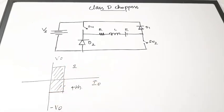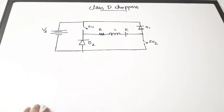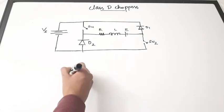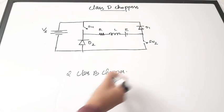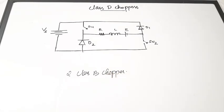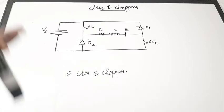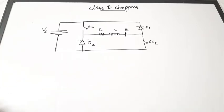Now let us see the operations of class D chopper in the first and the fourth quadrant. Before that, you should know that the class D chopper is nothing but two class B choppers connected together. When you connect two class B choppers together you get a class D chopper, and that is how class D choppers are generally made.